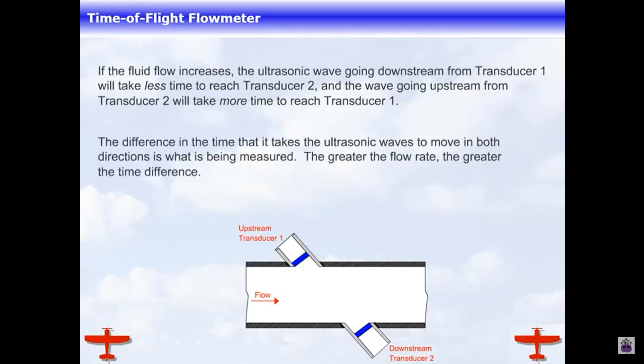The difference in the time that it takes the ultrasonic waves to move in both directions is what is being measured. The greater the flow rate, the greater the time difference. The time difference is a direct measure of time and is electronically converted to volumetric flow rate.